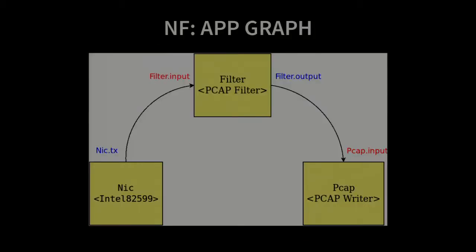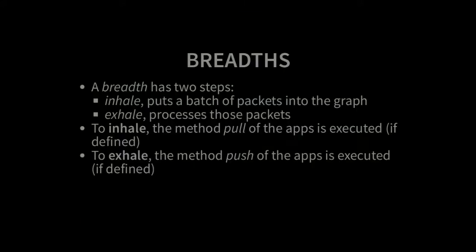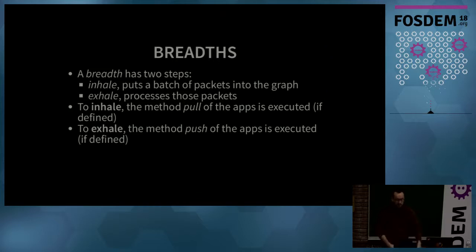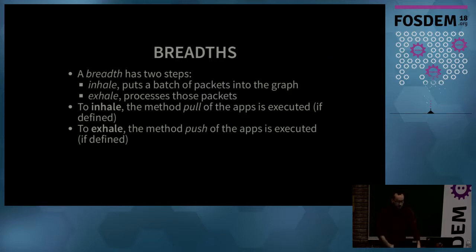As a graph, whatever comes out from the NIC goes to the filtering app, which does something with the packets, and whatever comes out is passed to the pcap app that writes the packets to a file. The SNAP engine processes packets in breaths, which has two steps: an inhale step that puts a batch of packets into the graph, and an exhale step that processes those packets. On the inhale step, the pull method of the apps is executed; on the exhale step, the push method is executed.